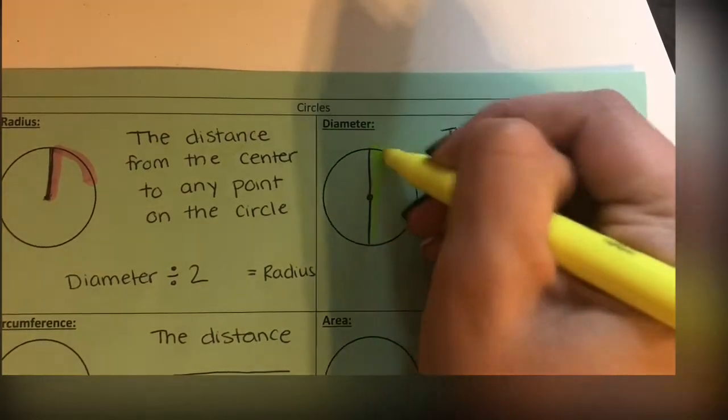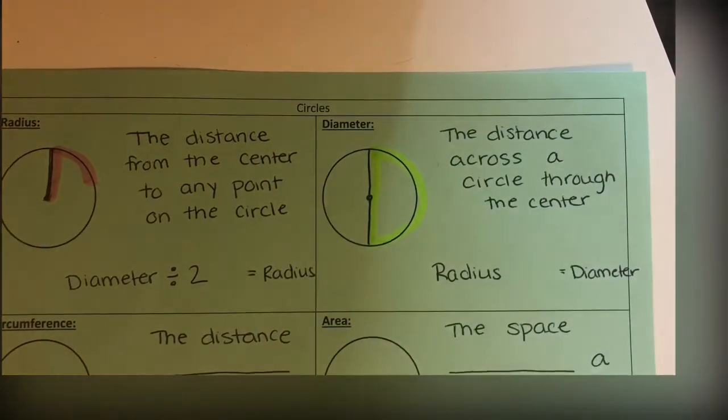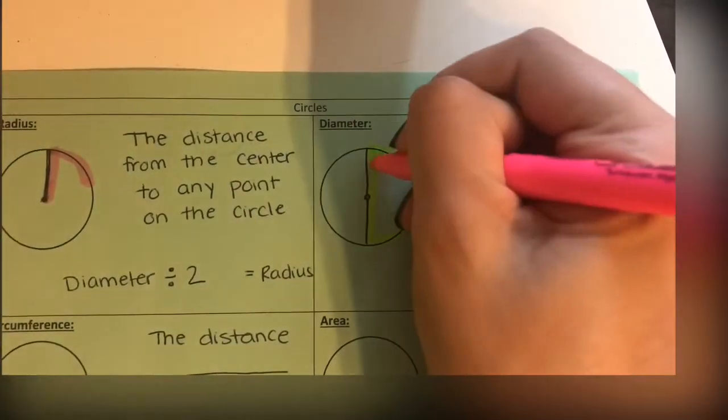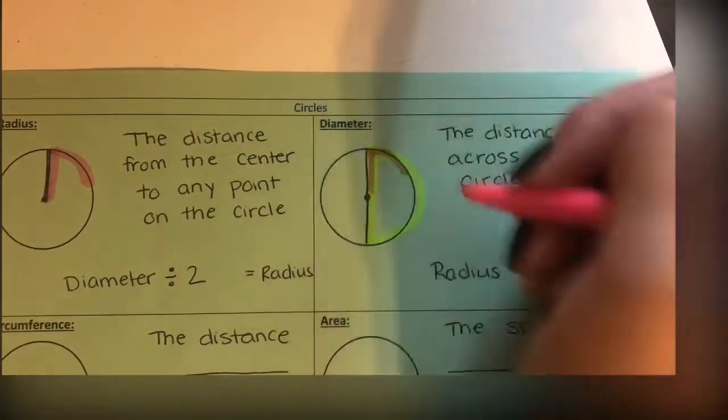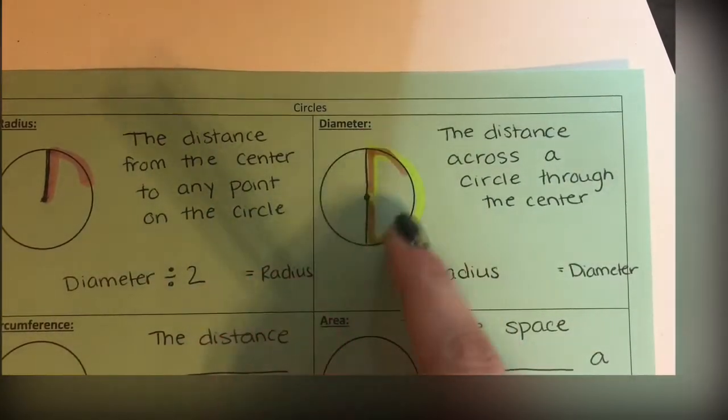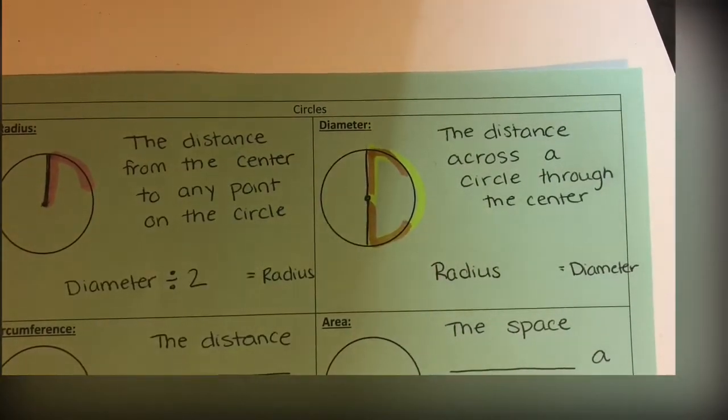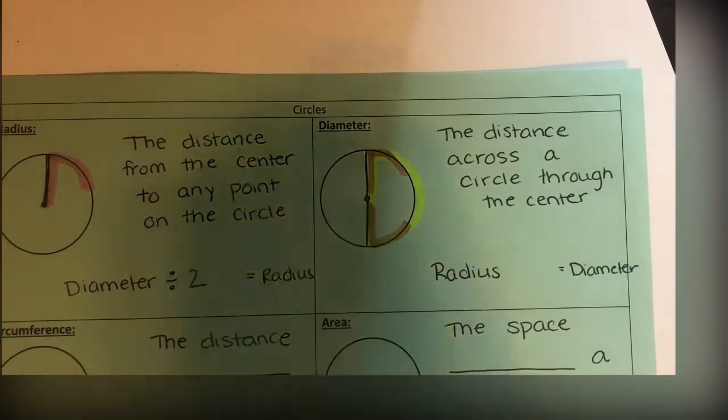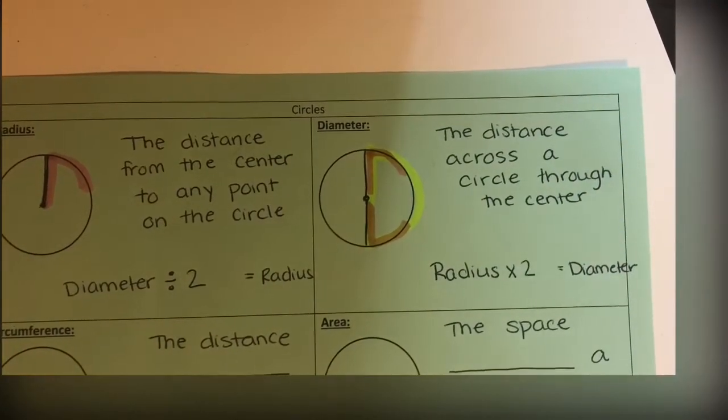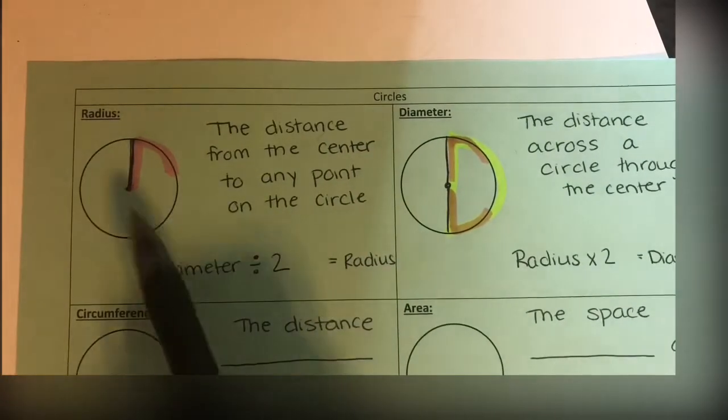If I have one radius right here and another radius right here, two radius equals one diameter. So if I take a radius and multiply it times two, I get diameter. When you're calculating, they're either going to give you the radius or the diameter, and you're going to have to know how to switch between these two.